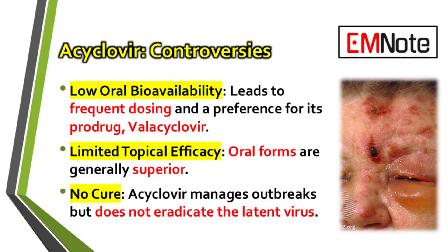For instance, while valacyclovir is often preferred for convenience in suppressive therapy, the cost-effectiveness of generic acyclovir remains an important consideration. Additionally, while acyclovir is a powerful therapeutic tool, it does not eradicate the latent virus from the host's body. The virus can persist in nerve ganglia and reactivate at a later date, which is a crucial point to communicate to patients. Therefore, therapy is aimed at disease management rather than a definitive cure.